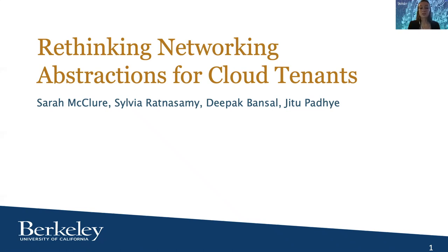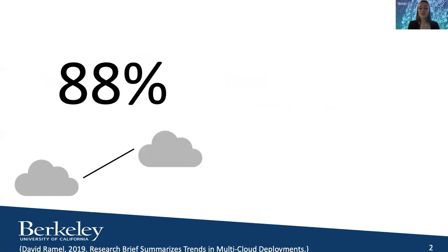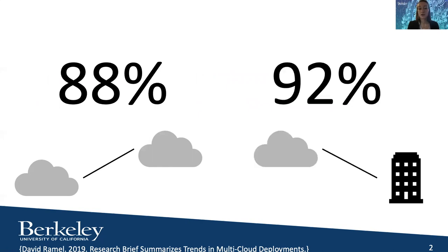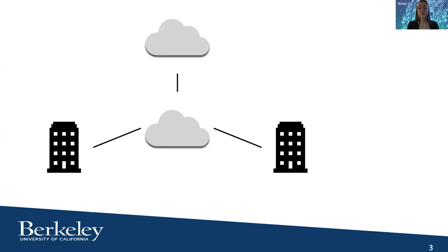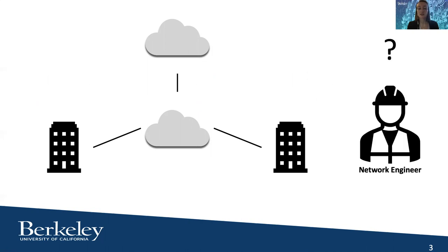Hello, my name is Sarah McClure, and today I'll be talking about how we should rethink tenant networking abstractions. A recent study found that 88% of responding enterprises use two or more cloud providers, and 92% use both public and private cloud deployments. Consequently, many enterprises must construct and manage their own virtual equivalent of a backbone network. In our paper, we argue that the realities of this task are unnecessarily complex for tenants to manage, and seek to offer a much simpler solution.